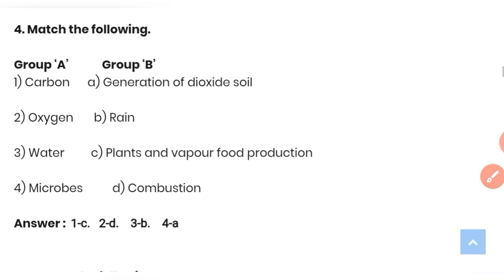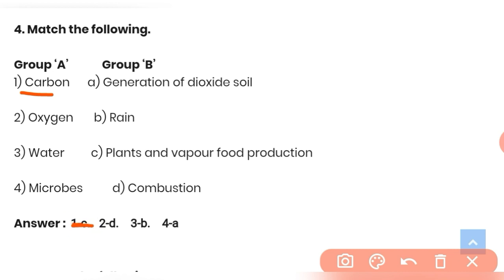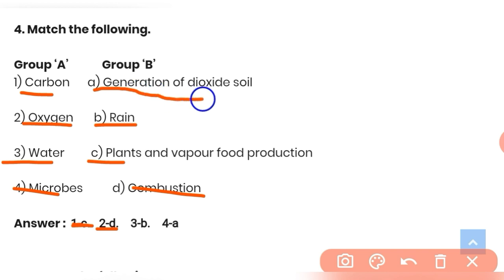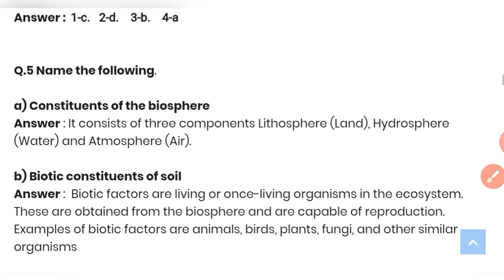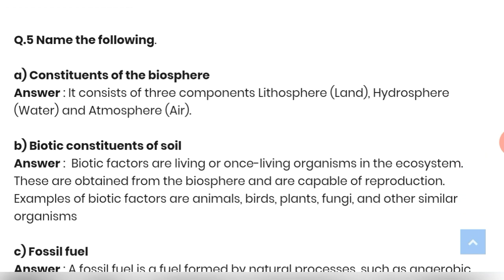Question 4: Match the following. Group A includes carbon — used mainly by plants for food production; oxygen — used for combustion; water — important for rain; and microbes — for generation of carbon dioxide.